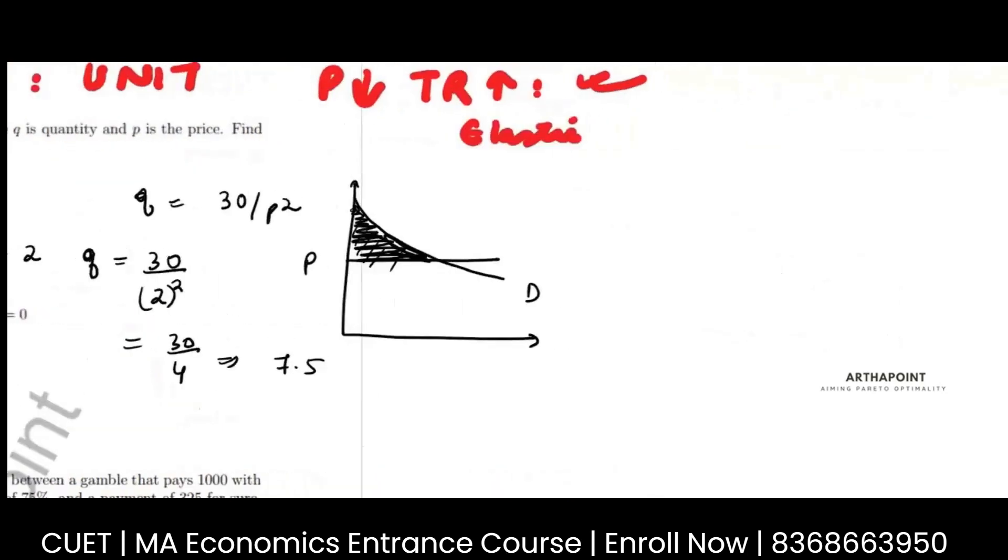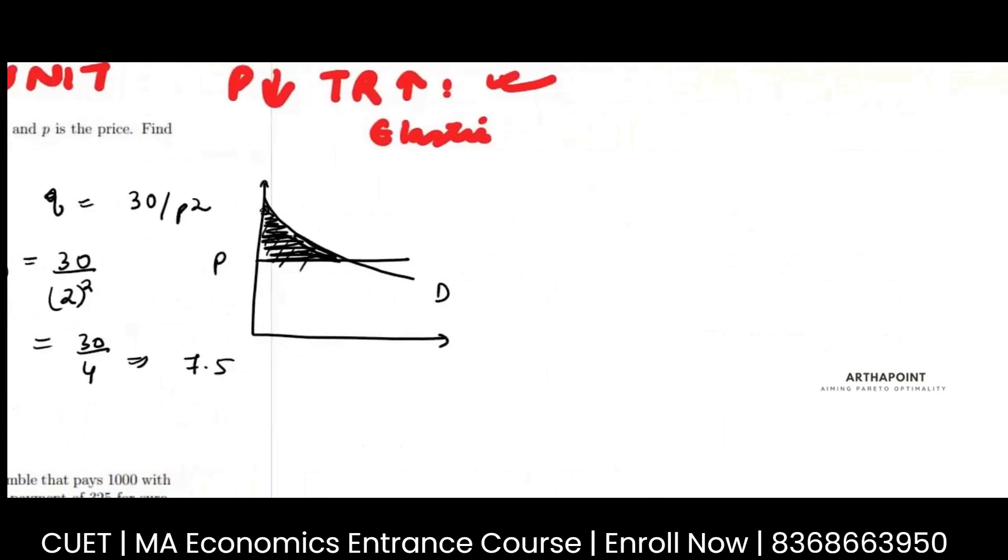Now just see here, I am saying that when my P is 2, demand is 7.5. I cannot go ahead and find this area using any other method other than finding my area under the curve through integration.